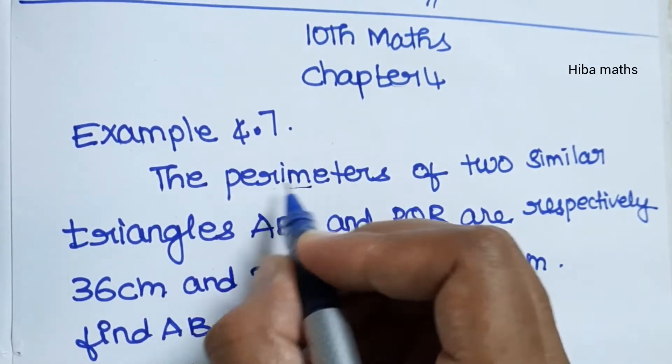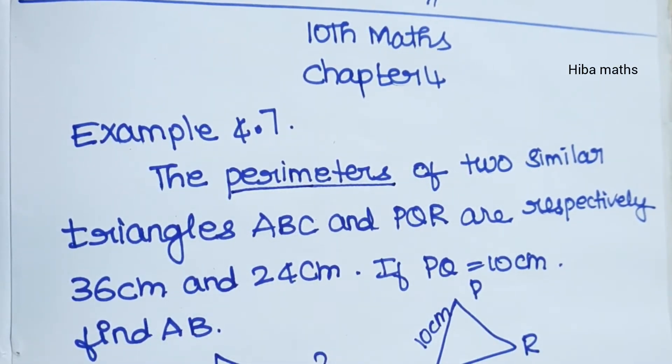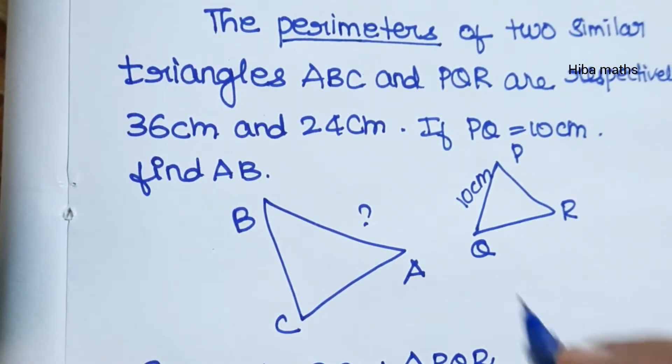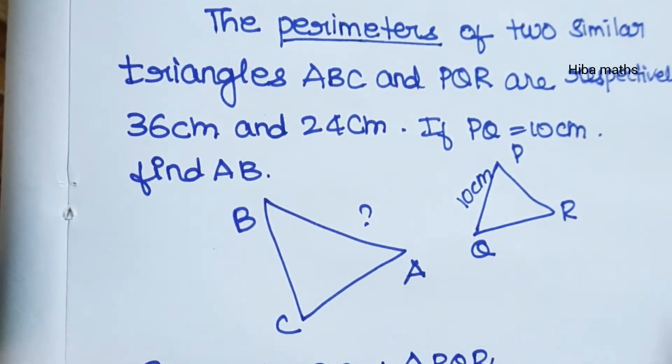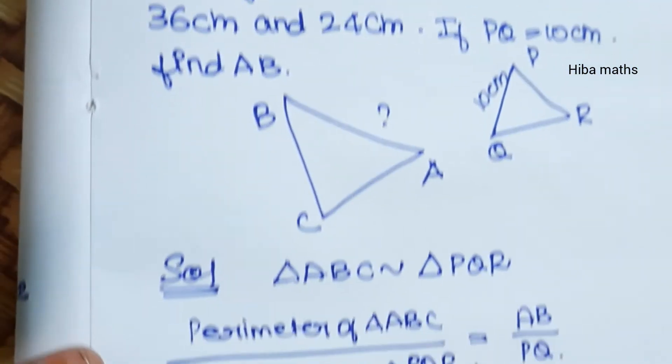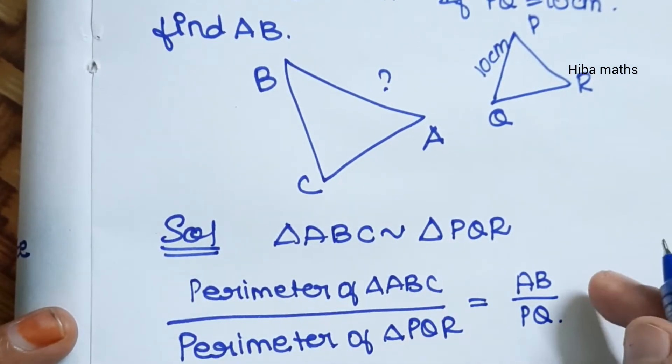So first, for the perimeter, we will see the similarity of triangles. What is the condition? I will tell you that when two triangles are similar, the ratio of their perimeters is equal to the ratio of their corresponding sides.